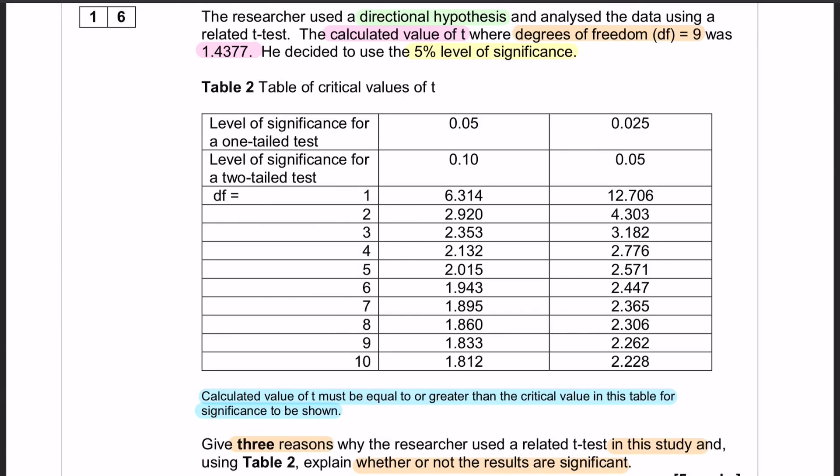All right, question number 16 is a statistical test question. Down at the bottom of the screen you can see what the question is: Give three reasons why the researcher used a related t-test in this study and, using Table 2, explain whether or not the results are significant. It is a five marker.